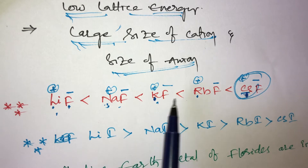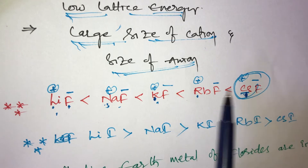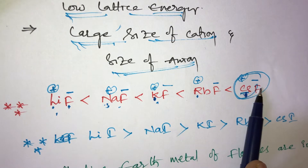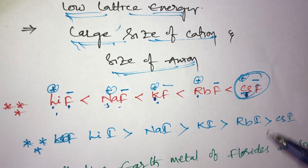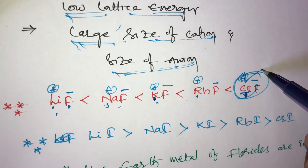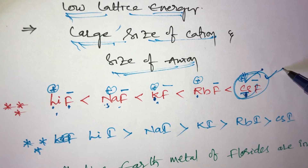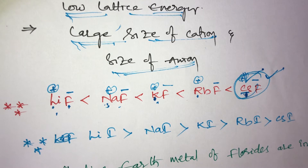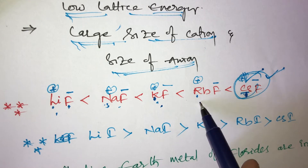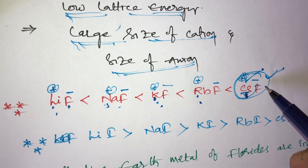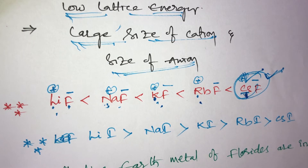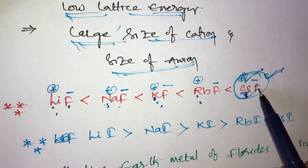Out of lithium, sodium, potassium, rubidium, and cesium — cesium is the largest cation, so it is highly soluble in water. The solubility order is: LiF < NaF < KF < RbF < CsF. Cesium fluoride is highly soluble in water due to the large size of cation and small size of anion.